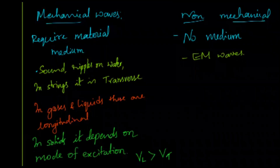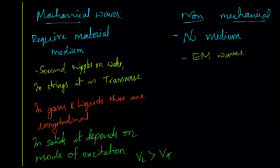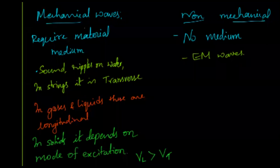Any part of the electromagnetic spectrum is independent of a medium for its propagation. Mechanical waves, on the other hand, need a medium. The best example is sound waves. In the classic experiment, a bell inside a jar rings audibly, but once you evacuate the air inside, you can't hear the bell — because there is no medium. Similarly, ripples on water exist only because of the water, and transverse waves in a string require the string itself.